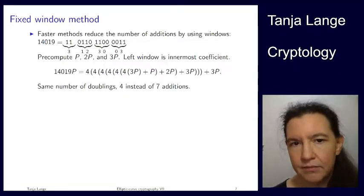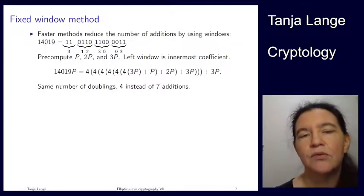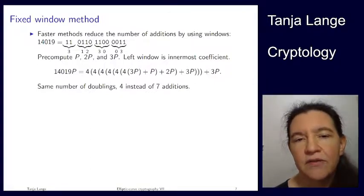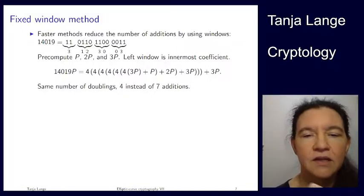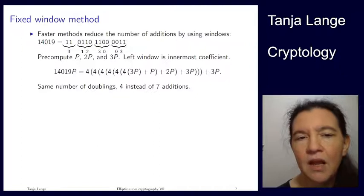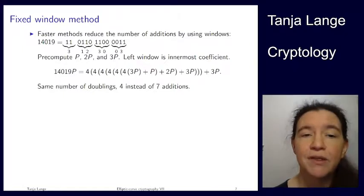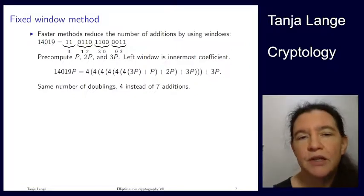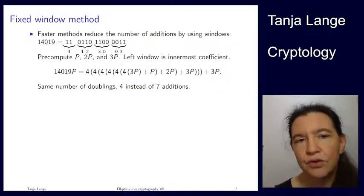This doesn't save us any doublings — each multiply-by-4 is two doublings — but we reduce additions. There is a sliding window method that could save more additions, but we don't cover it here because it's harder to protect against side-channel information. So in constructive applications of curve cryptography where side channels are a concern, we always use fixed windows.